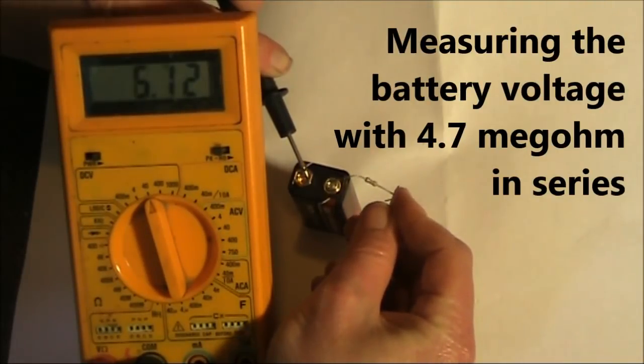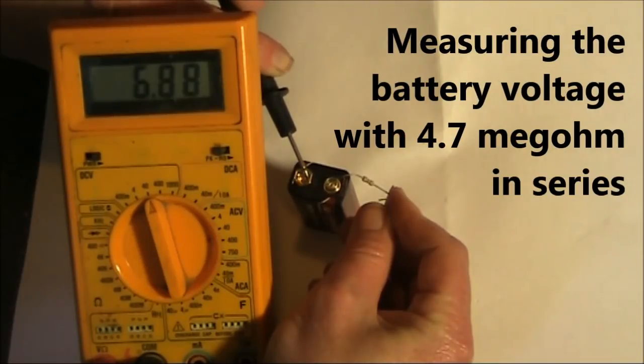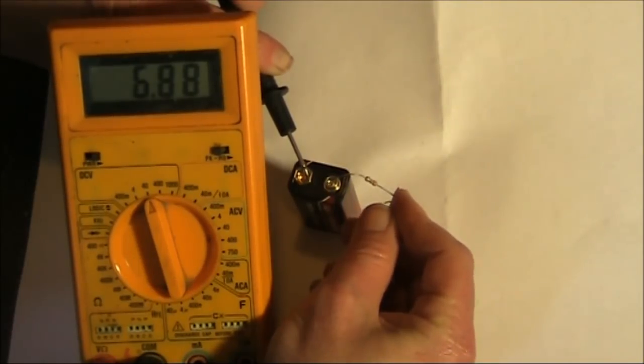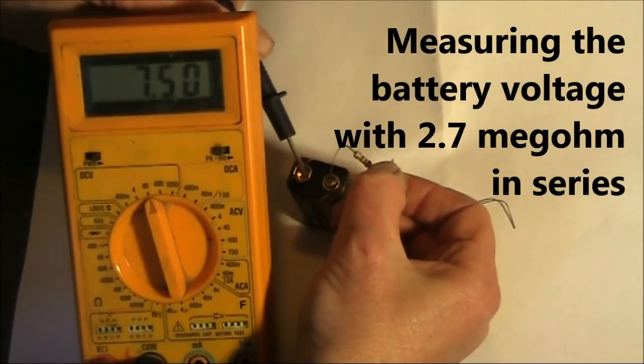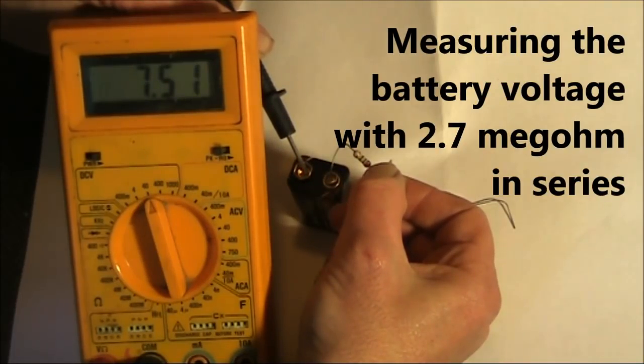This is with the 4.7 meg resistor, the 9 volt battery, and it's 6.88 volts. This is the 2.7 meg resistor. It's a lower resistance, as you'd expect, the reading is higher, 7.51 volts.